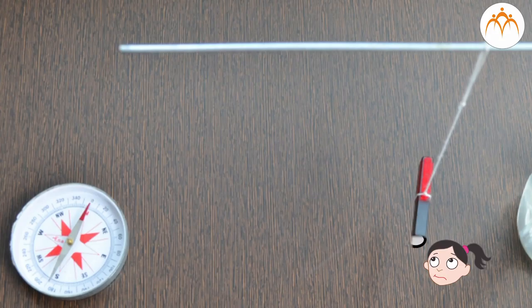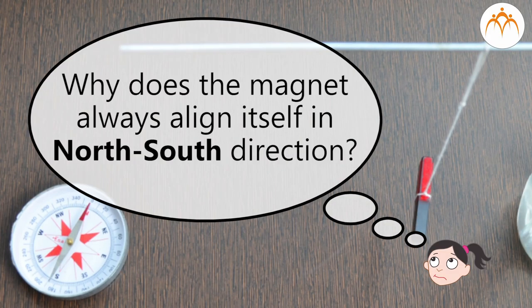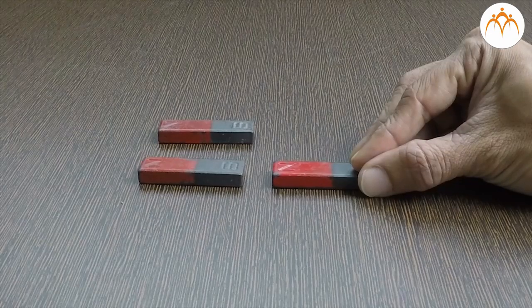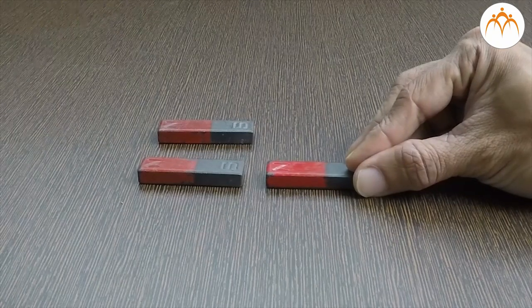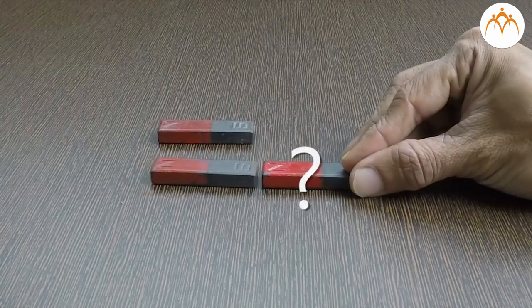If I hang one magnet, why does it always align itself in north-south direction and not in east-west direction? Think about it. There must be something else which is acting like a magnet. What is that?